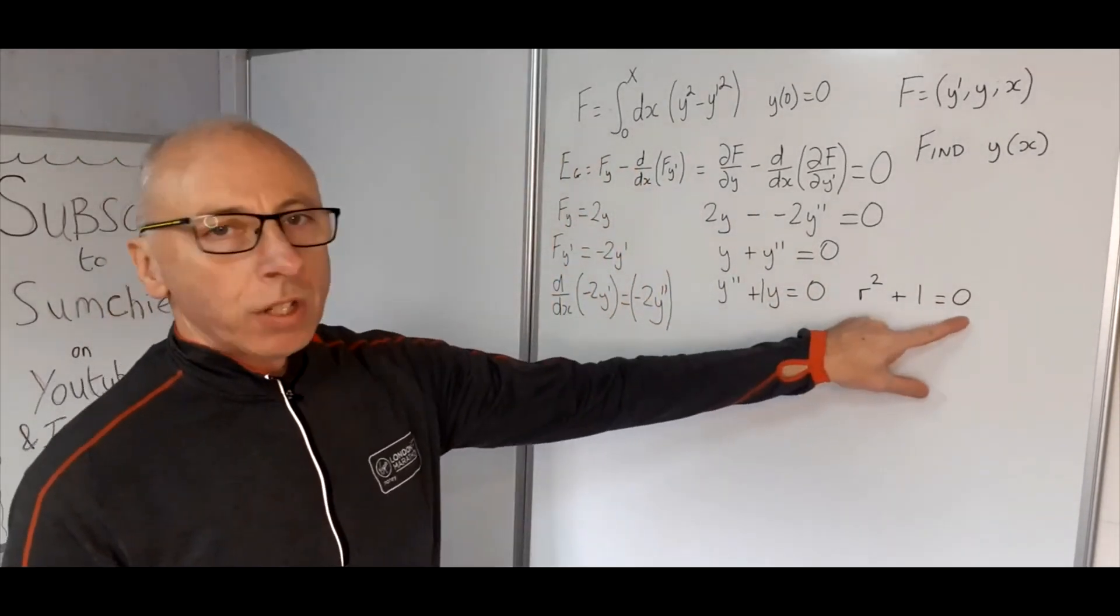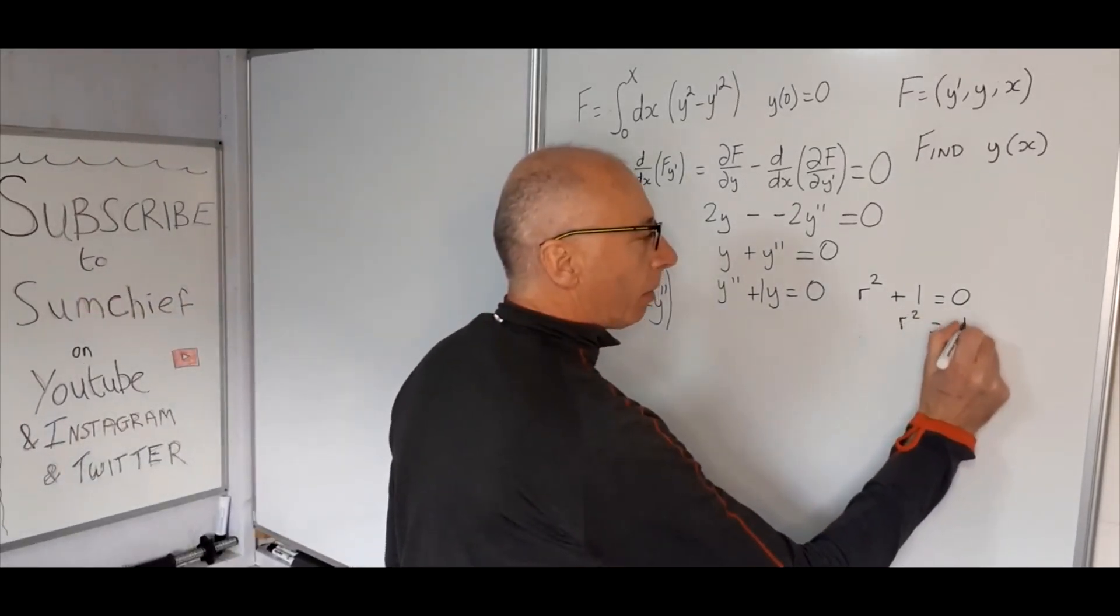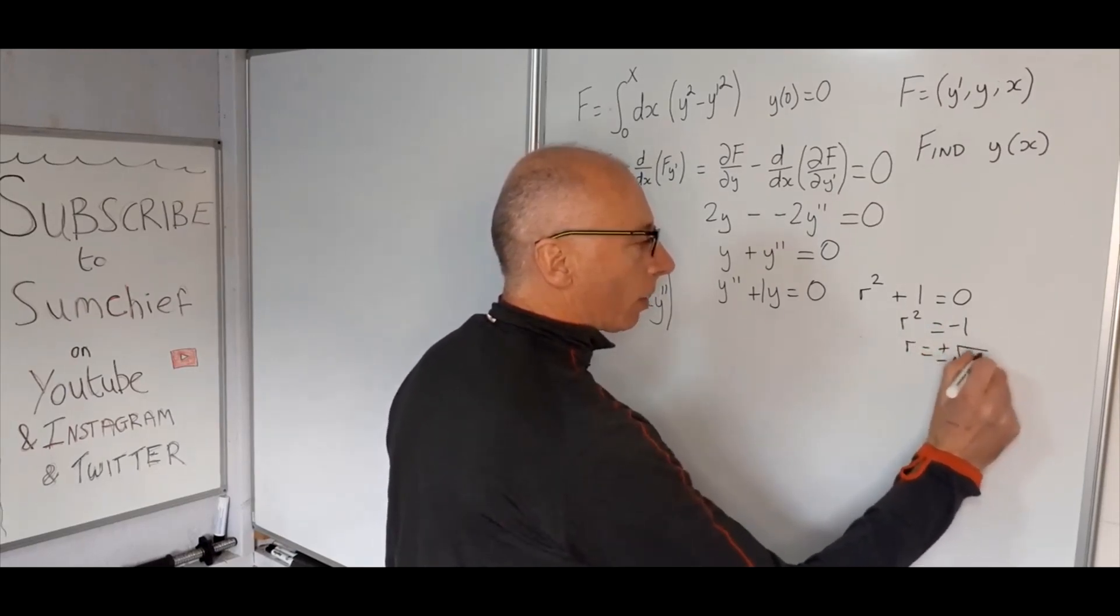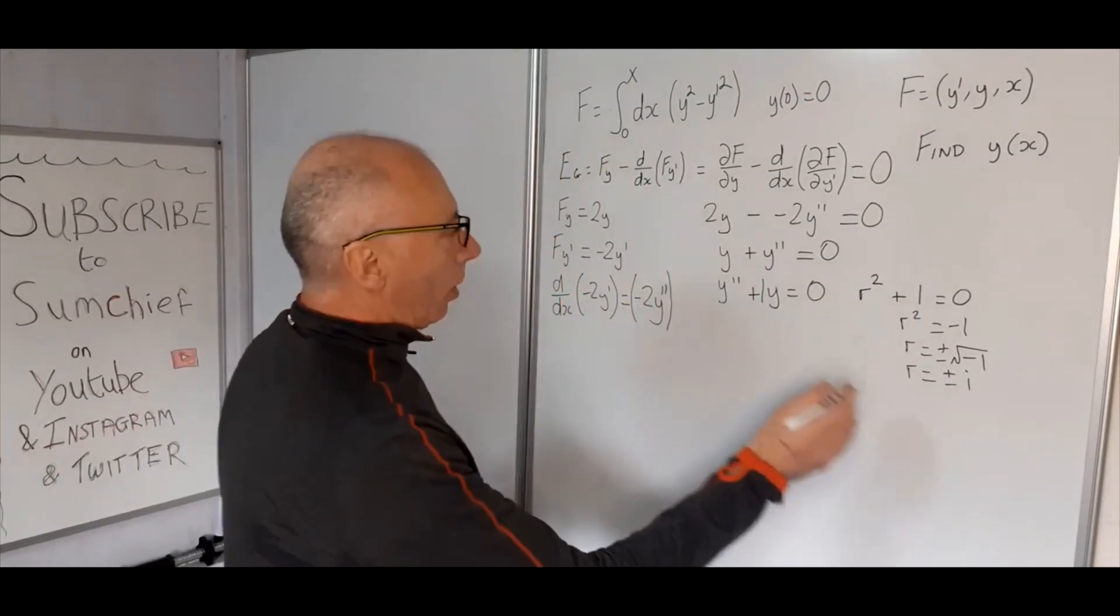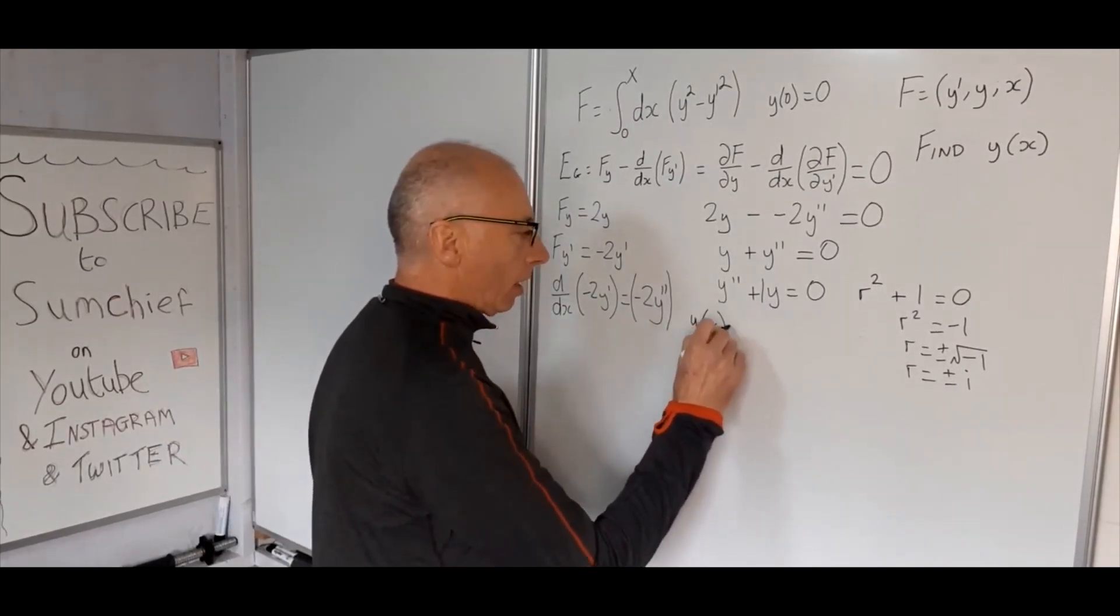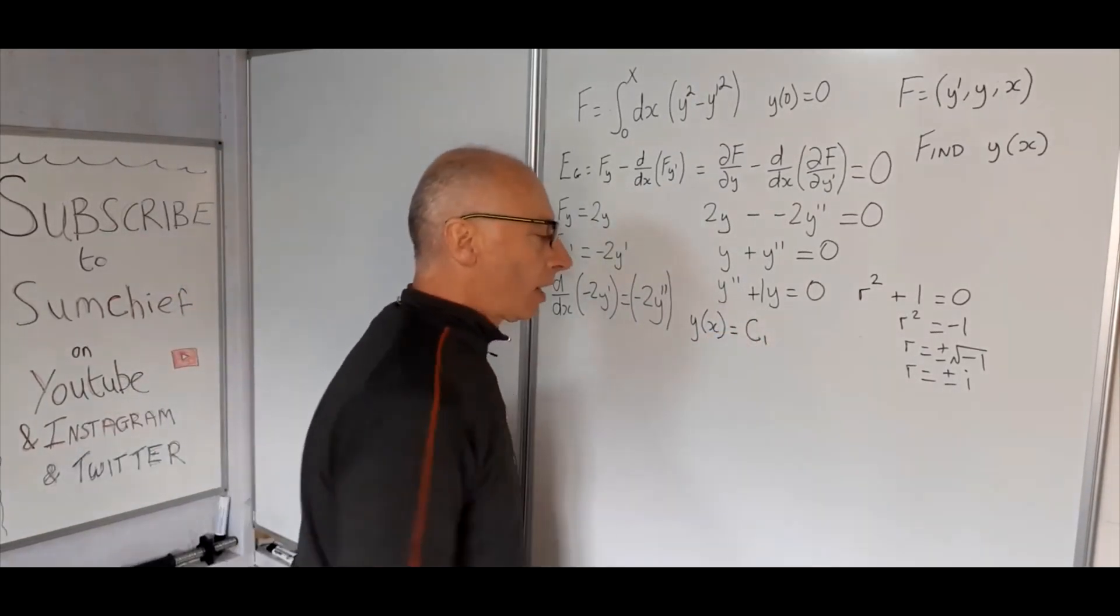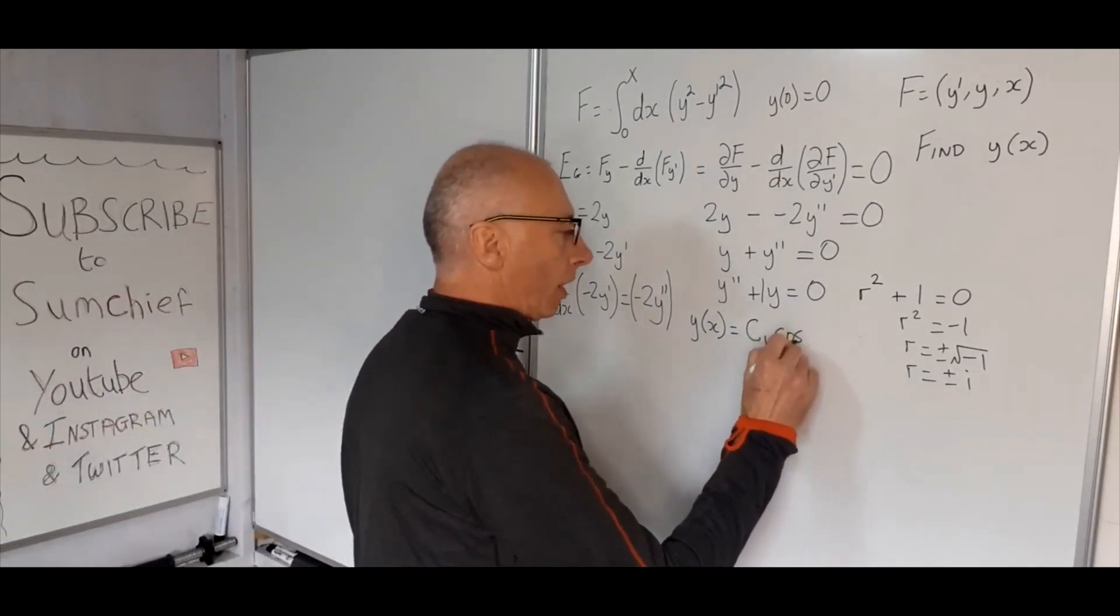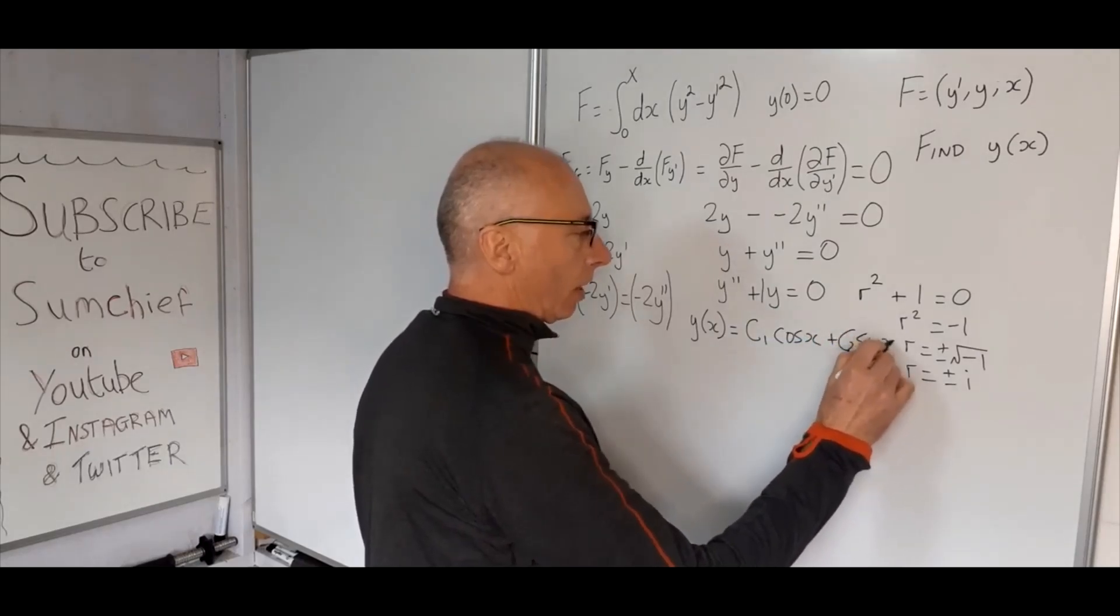So now what we do is try and solve this for r. So r squared equals minus 1. R equals plus or minus square root of minus 1, so r equals plus or minus i. Okay, so our building blocks now will be y of x equals—so first coefficient we're just going to put in as c1, that's an arbitrary constant. And that will be for cosine of x plus c2 sine of x.